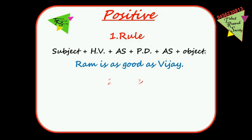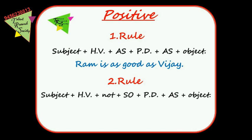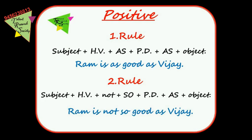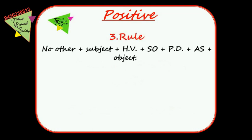Rule 2: Subject + helping word + not + so + positive degree + as + object. Because 'not' is present, before the positive degree comes 'so' and after comes 'as.' For example, 'Ram is not so good as Vijay.'